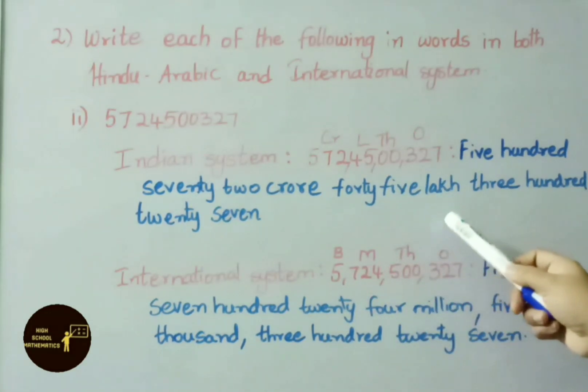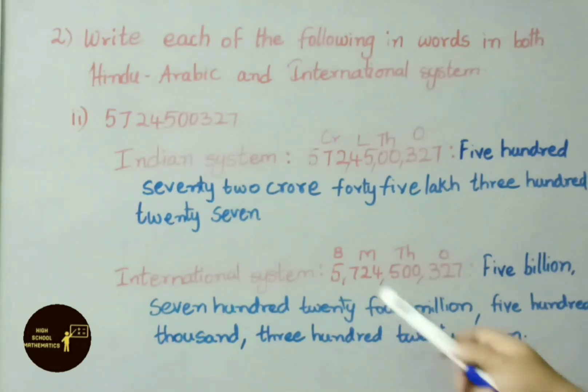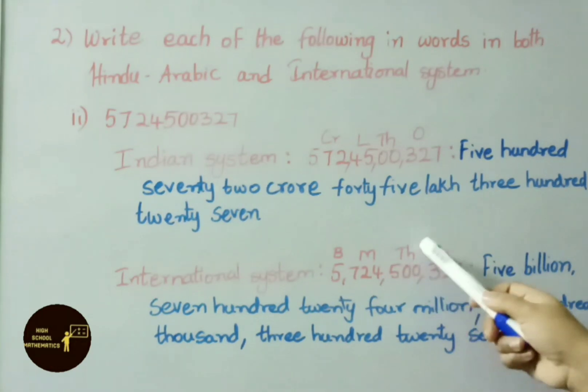Let us see this in word form: five hundred seventy two crore forty five lakh three hundred twenty seven. See the number in international system: 5,724,500,327. See this in word form now: five billion, seven hundred twenty four million, five hundred thousand, three hundred twenty seven.